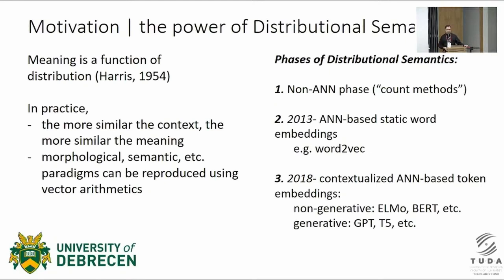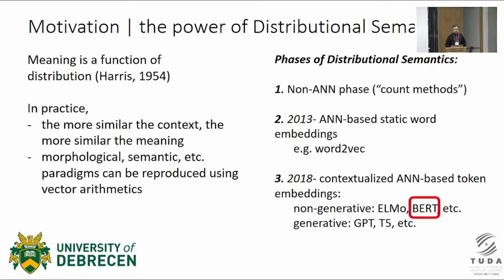Here we do not have a generative task at hand, but importantly, contextualized embeddings characterize individual uses of words rather than all uses at the same time. This is mission critical for us, as we are after various polysemous and homonymous uses of words. We selected four lemmas for our analysis.